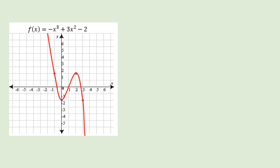Look at this beautiful cubic function. Let's take a value like 2 and use one-sided limits. The limit of f of x as x approaches 2 — if you approach 2 from the left, as we get closer and closer to 2, the function is getting closer to 2. So the limit of f of x as x approaches 2 minus is 2.